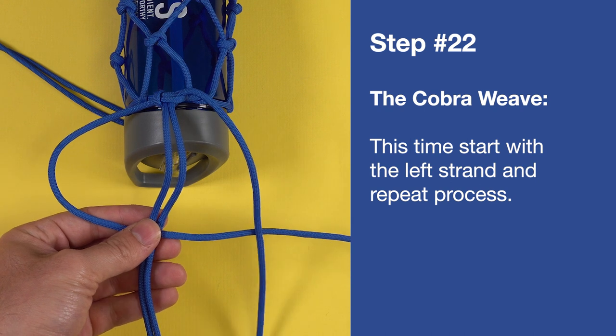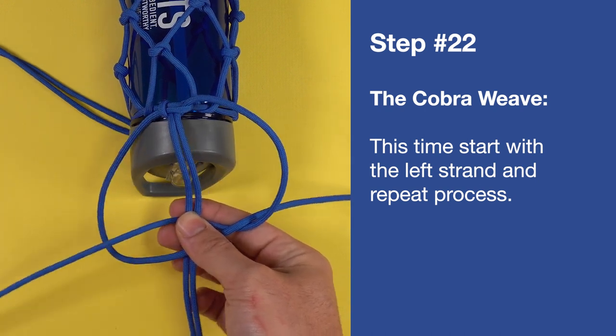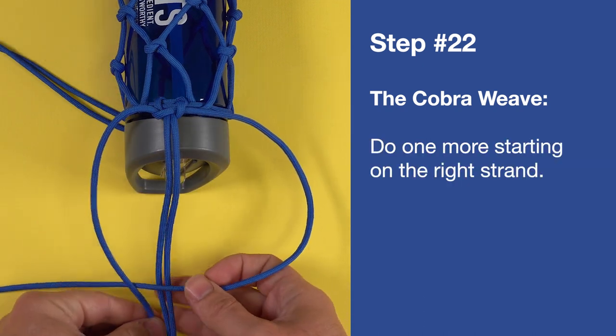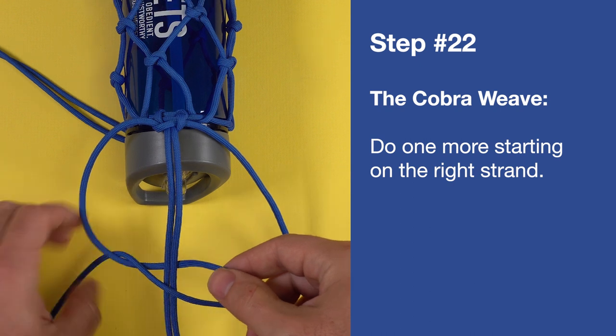This time start with the left strand and repeat the process. Do one more starting on the right strand this time, for a total of three cobra weave moves.